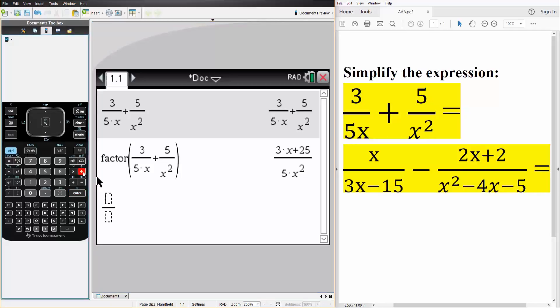So we hit ctrl division, we have x in the numerator, denominator we have 3 times x minus 15 minus.